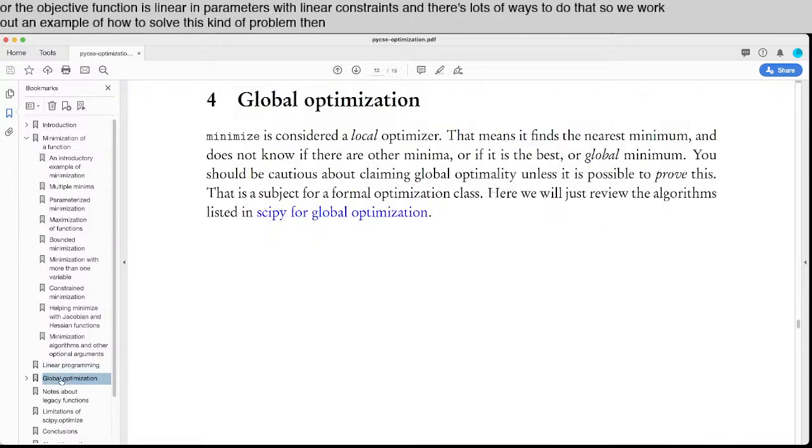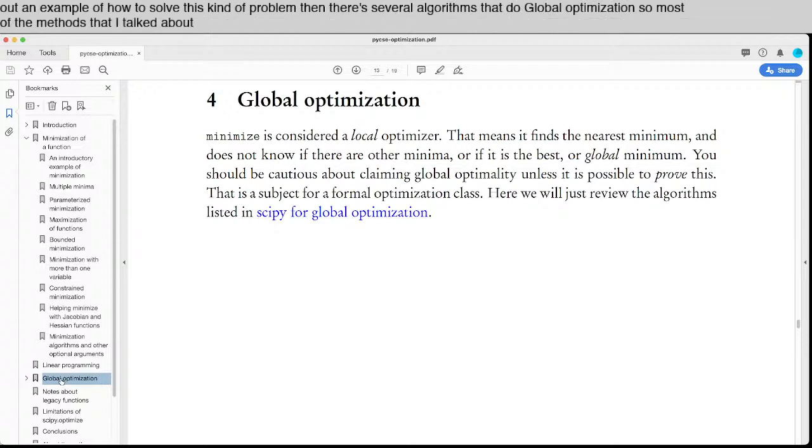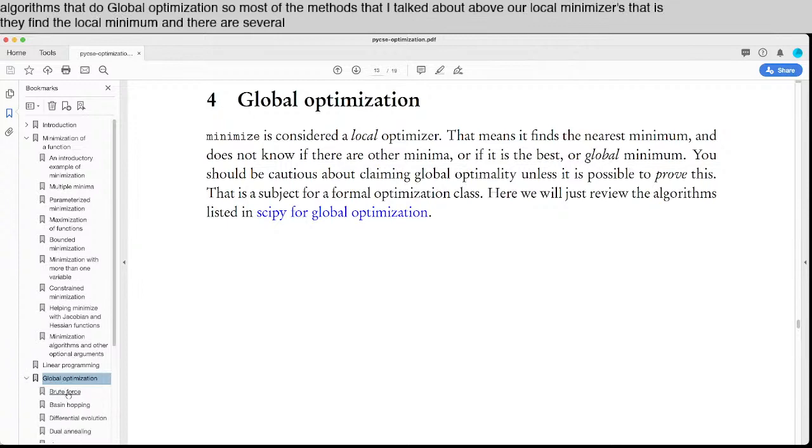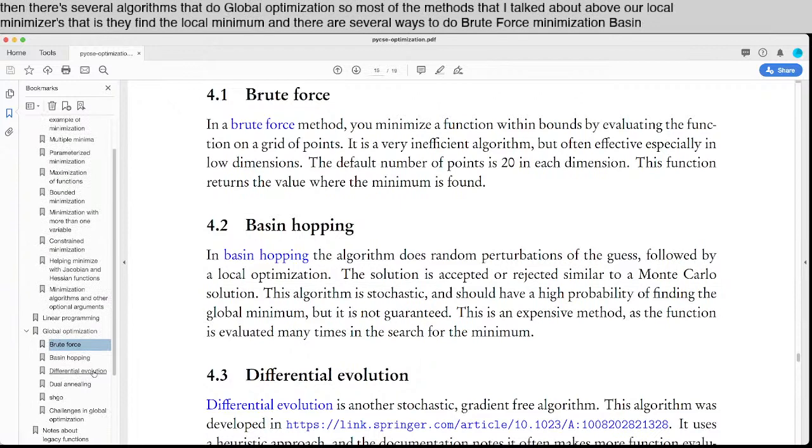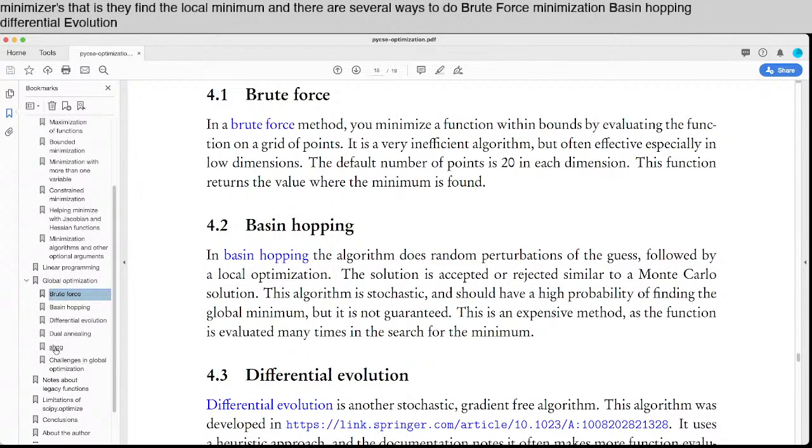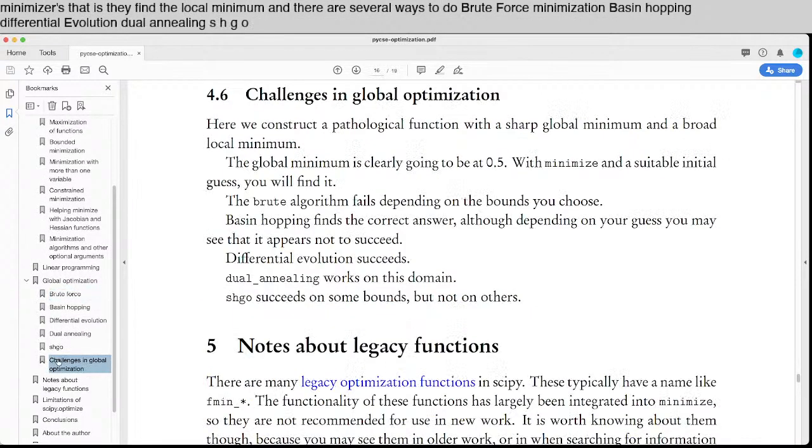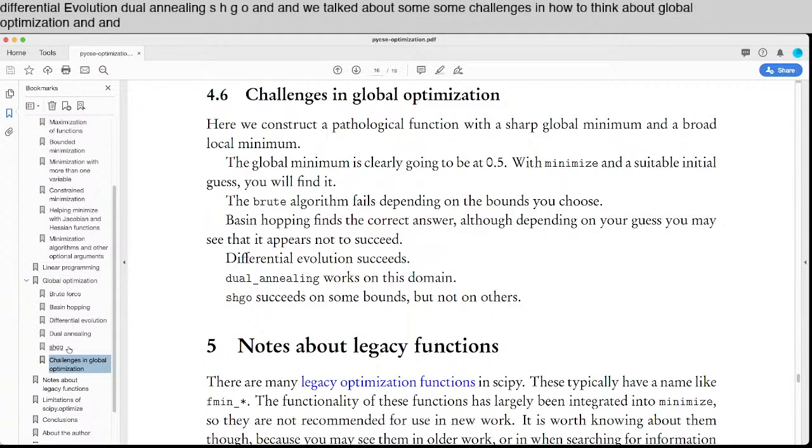Then there's several algorithms that do global optimization. Most of the methods I talked about above are local minimizers, that is, they find the local minimum. There are several ways to do brute force minimization: basin hopping, differential evolution, dual annealing, SHGO, and we talk about some challenges in how to think about global optimization and what we expect to see.